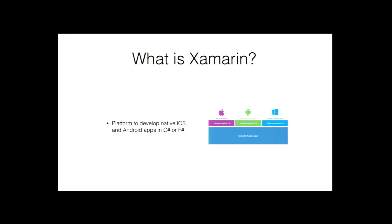Xamarin is a platform to develop native applications using the C# or F# languages. It builds on top of an open source project called Mono. You can build native applications for iOS, Android, and Microsoft, of course, delivers .NET and C# on Windows. The benefit is you get shared app logic — it's kind of cross-platform, partially cross-platform.